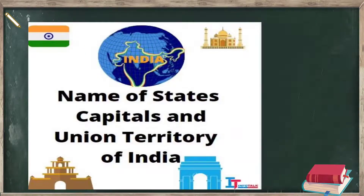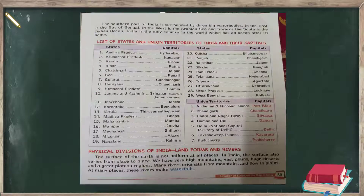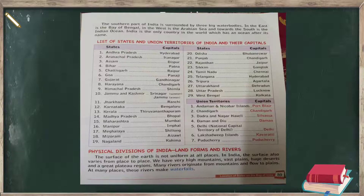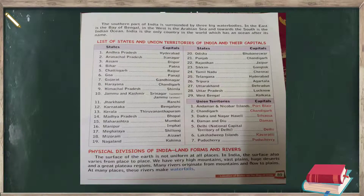Now we will discuss the names of the states, their capitals, and the union territories of India and their capitals. Please listen carefully, as you will need to learn the state capitals and union territories and their capitals. The southern part of India is surrounded by three large water bodies: the Bay of Bengal in the east, the Arabian Sea in the west, and the Indian Ocean to the south. India is the only country in the world that has an ocean named after it.